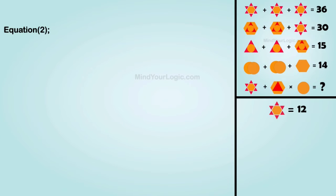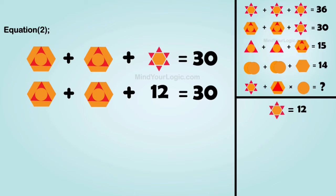Moving forward to equation 2. Hexagon triangle plus hexagon triangle plus hexagon star equals 30. Substituting the value of hexagon star, we get the value of hexagon triangle equals 9.